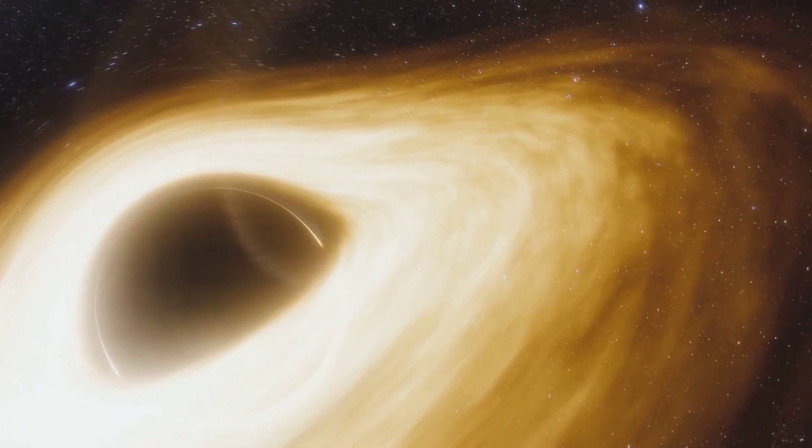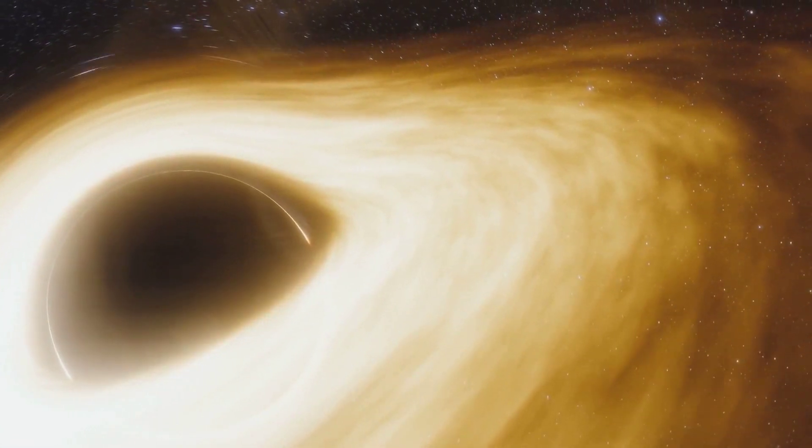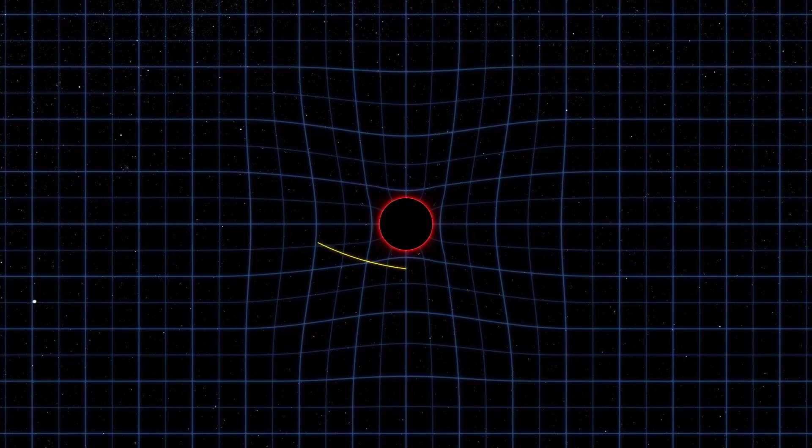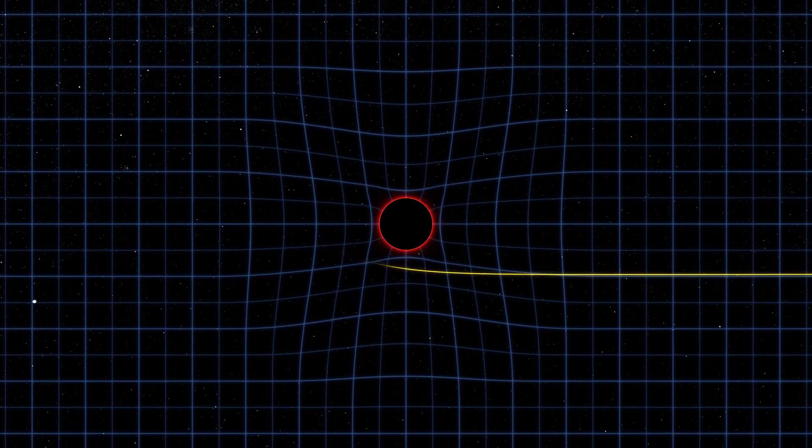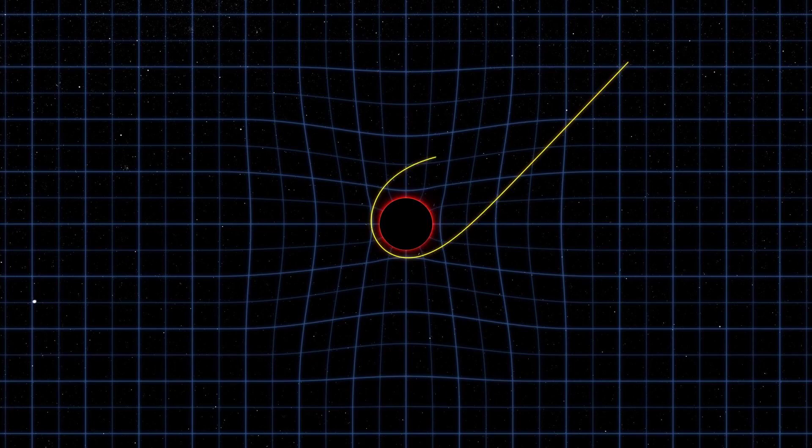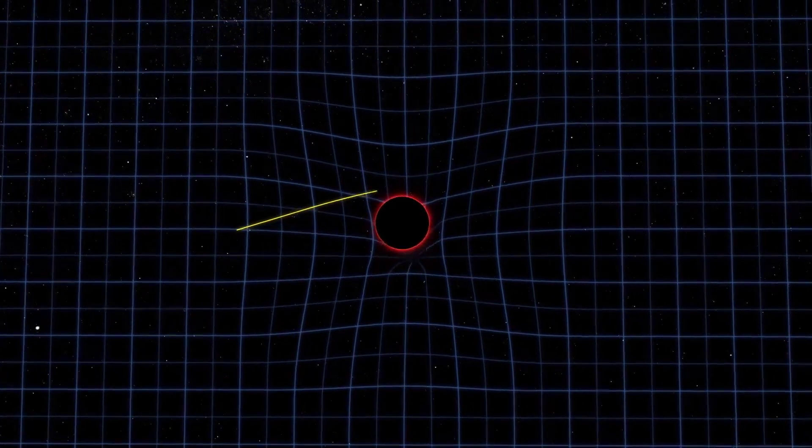To understand this, we need to take a quick detour into the world of general relativity. General relativity is a theory developed by the great Albert Einstein, and it explains how gravity works in the universe. According to this theory, massive objects like stars and planets actually warp the fabric of space-time around them.